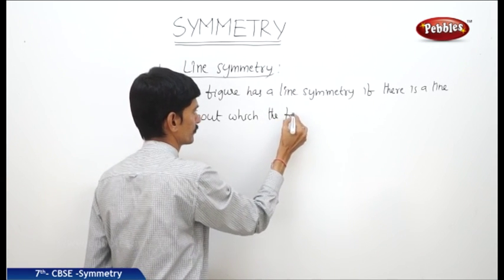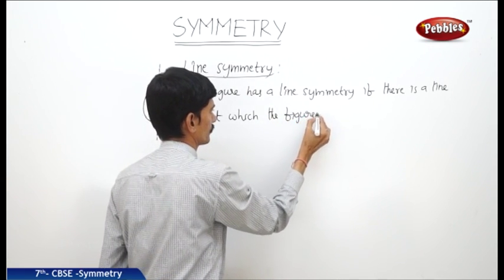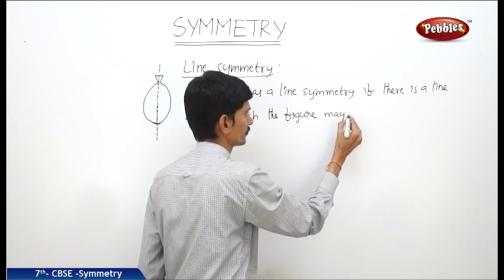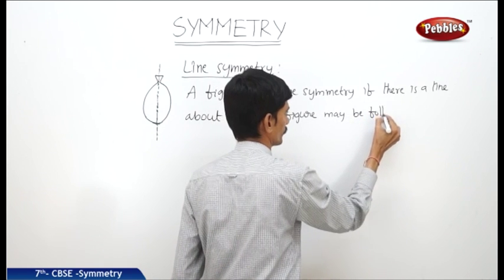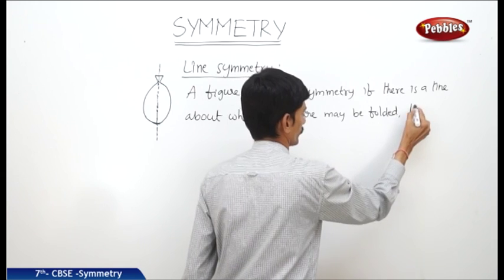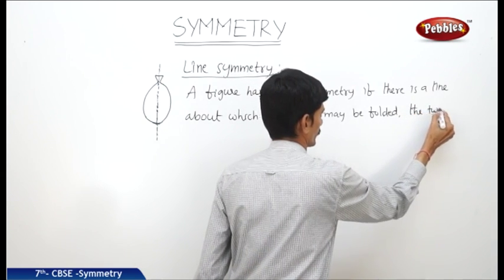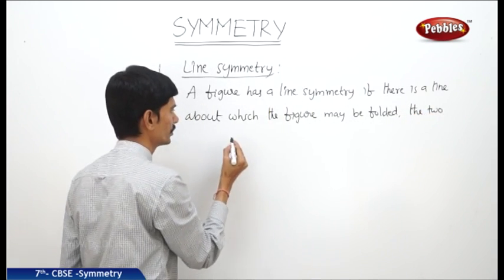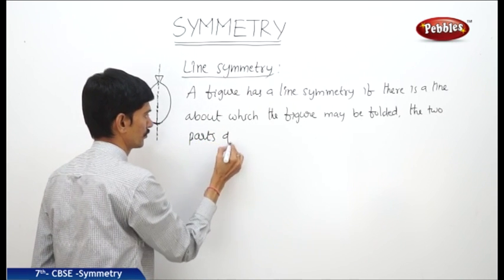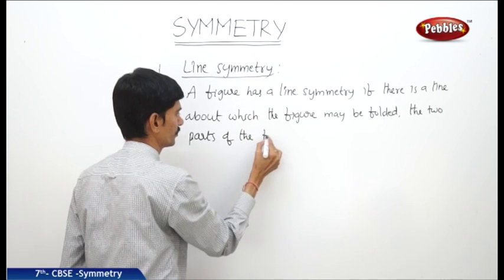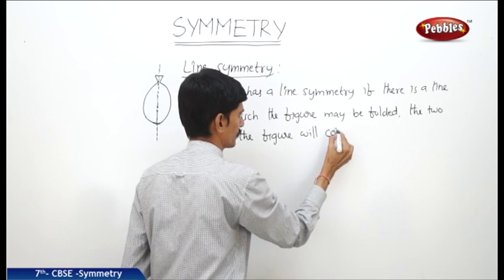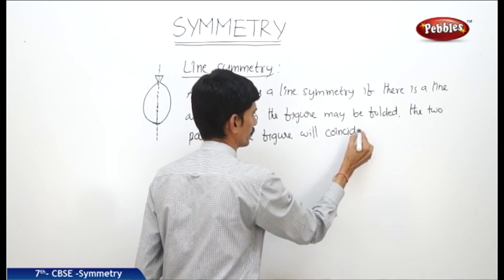The figure may be folded such that the two parts of the figure will coincide with each other — this is the definition of line symmetry.